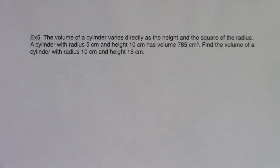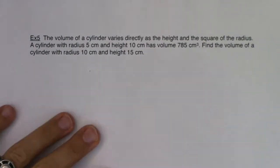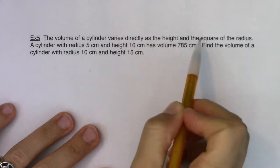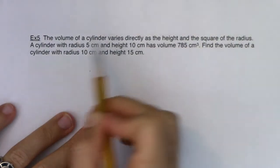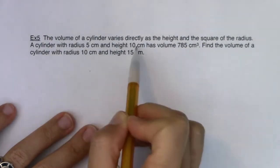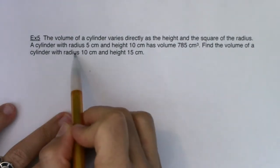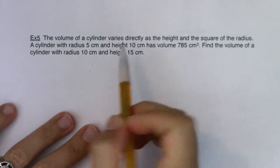Hey Math 31, let's get going with this word problem. We have the volume of a cylinder varies directly as the height and the square of the radius. A cylinder with radius 5 centimeters and height 10 centimeters has a volume of 785 centimeters cubed. Find the volume of a cylinder with radius 10 and height 15.